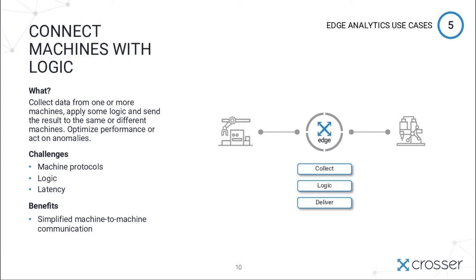Number five is another on-premise use case, and here we're connecting machines — collecting data from one machine, applying some logic to that data, which could be analysis or anomaly detection logic, and then delivering the result back to the same machine or another machine. The first reason to do this is for optimization: you analyze data from one machine and generate an output that tunes some setting in another machine or the same machine.